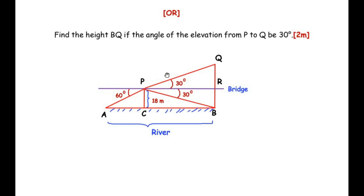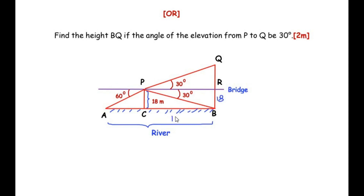Find the height BQ if the angle of elevation from point P to point Q is 30 degrees. The height BQ is made up of two parts: height BR and height QR. Since the bridge and river are parallel, PCBR is a rectangle, so BR = PC = 18 meters. Similarly, BC = PR = 18√3 meters. So PC = BR = 18 meters and BC = PR = 18√3 meters.